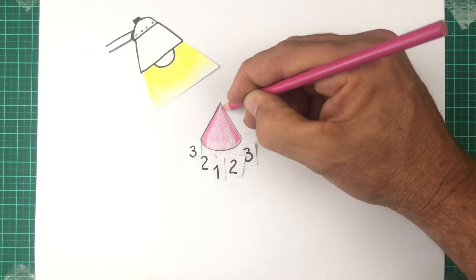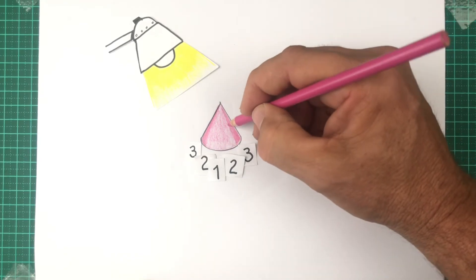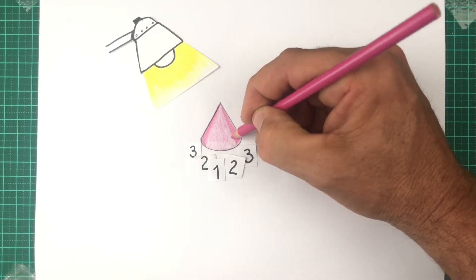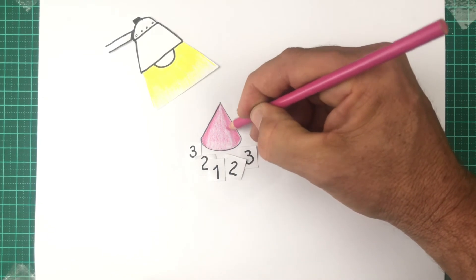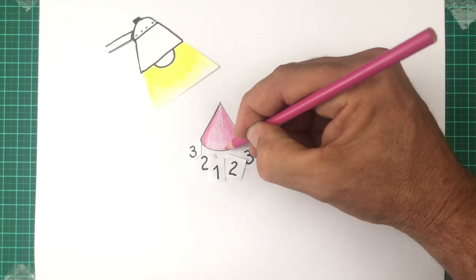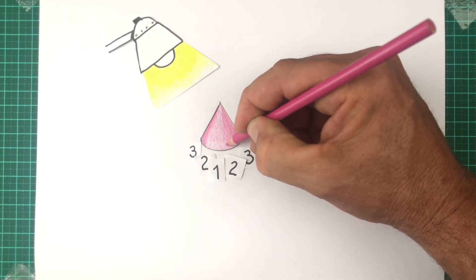So I'm laying down my number 3 value now. And notice it's in the shape of a triangle. It's wider at the base than it is up at the apex. Now I'm blending the 3 into the 1. So I'm using a number 2 value.